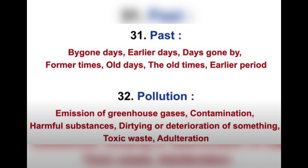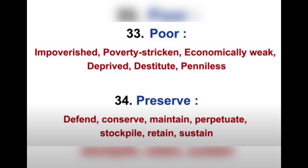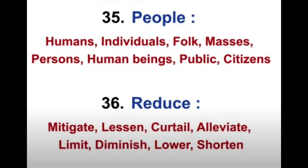For 'pollution' you can use: emission of greenhouse gases, contamination, harmful substances, dirt, deterioration, toxic waste, and adulteration. For 'poor' you can use: impoverished, poverty-stricken, economically weak, deprived, destitute, and penniless. For 'preserve' you can use: defend, conserve, maintain, perpetuate, stockpile, retain, and sustain. For 'people' you can use: humans, individuals, folk, masses, persons, human beings, public, and citizens.